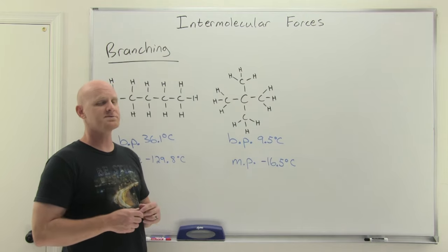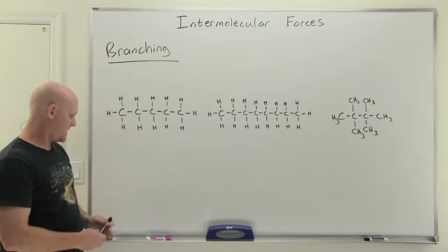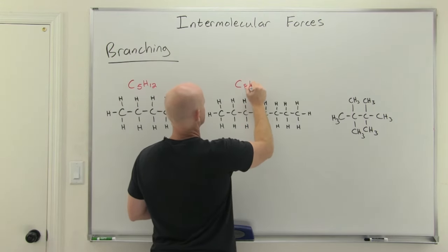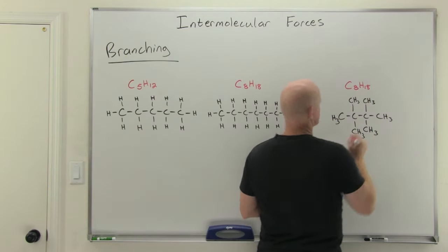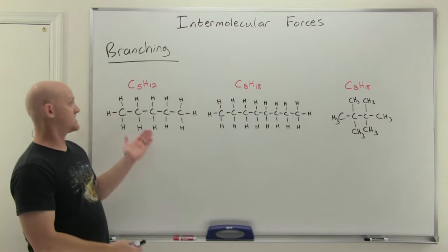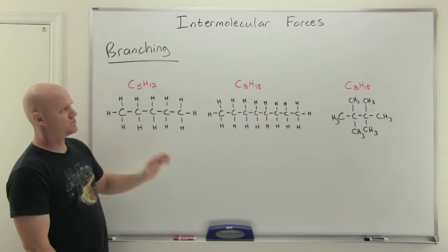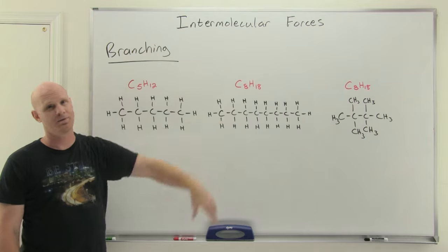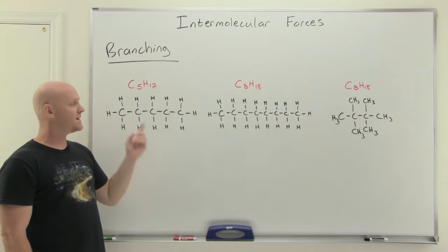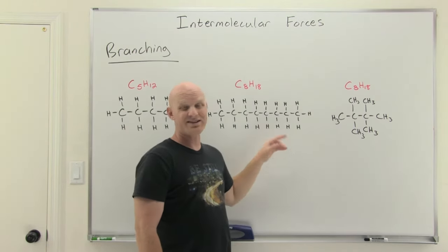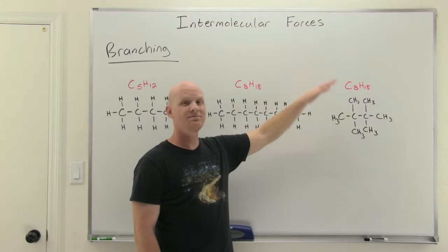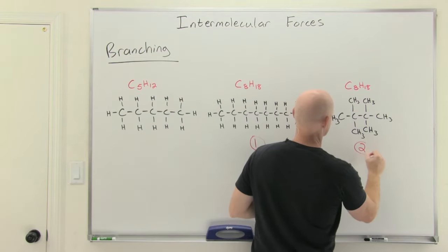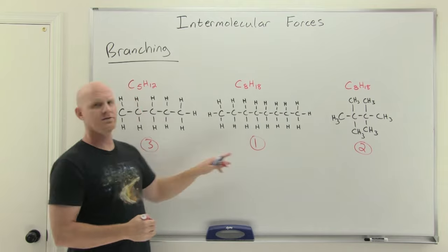Let's work an example ranking boiling points. We have three compounds: one with formula C5H12 and two with formula C8H18. To identify the lowest boiling point, we pick the C5H12 — it is the smallest in size. We reserve the branching comparison for isomers. For the two C8H18 isomers, the more branched one has a smaller surface area and a lower boiling point. Ranking by boiling point: the unbranched C8H18 is highest, the branched C8H18 is second, and the C5H12 is lowest.